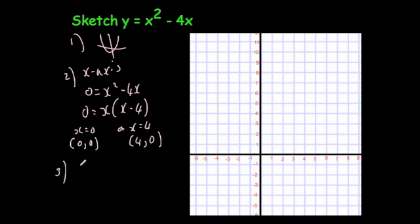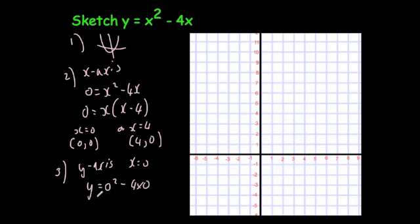Next, we need to find where it crosses the y-axis. You let x equals 0, giving y equals 0 squared minus 4 times 0, which is 0. Because it crosses both the x-axis and y-axis at 0, it's going to go through the origin at (0, 0), and also through the point (4, 0). That gives a U-shaped parabola through those points.